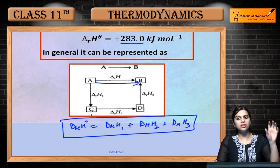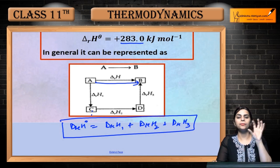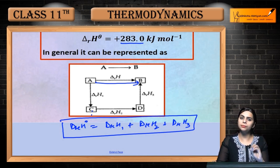Hess's law means that all the enthalpies in different steps are combined - their summation converts the reactant to the product.